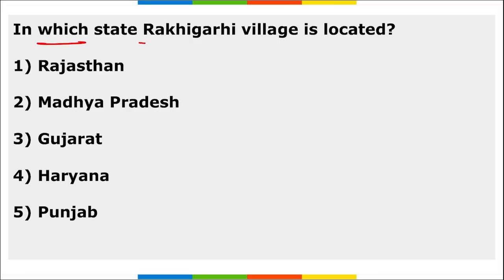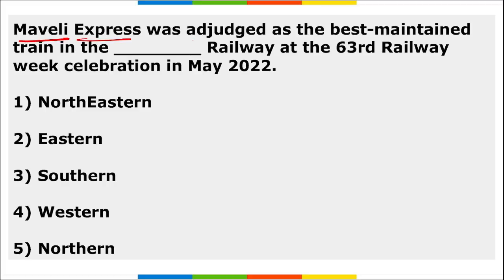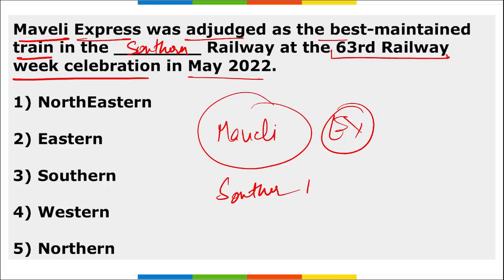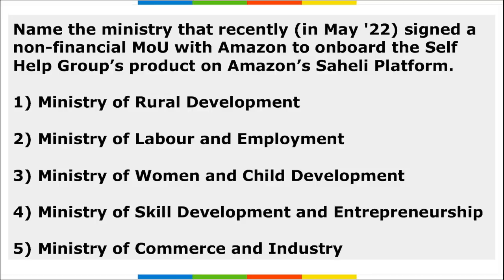Rakhigarhi village, an archaeological site of the Indus Valley Civilization, is located in Haryana. Maveli Express was adjudged the best maintained train in the Southern Railway during the 63rd Railway Week celebration in May 2022.